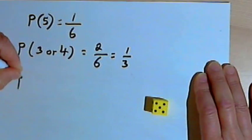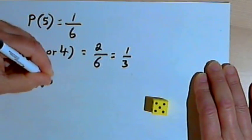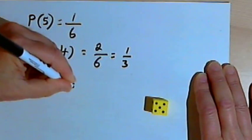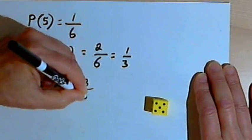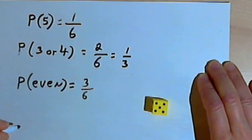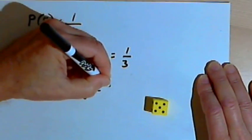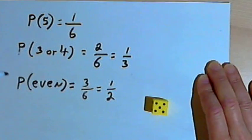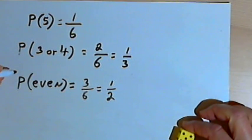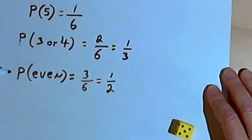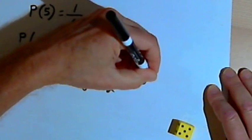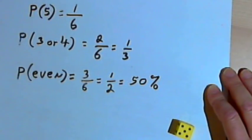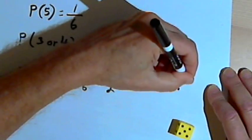If I wanted to find the probability of getting an even number, on a die there are three even numbers — 2, 4, and 6 — so the probability of getting an even number would be 3 over 6. I can express probability as a reduced fraction — 3 over 6 reduces to 1 half — or as a percentage: 1 half is 50%. As a decimal, I could write that as 0.5.